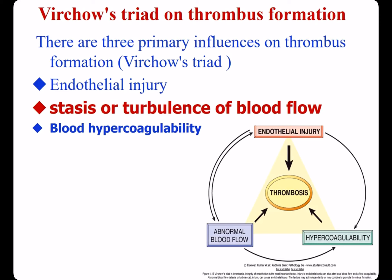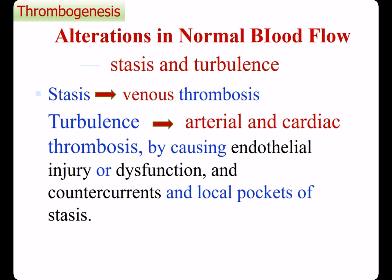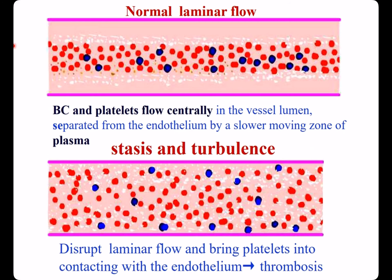Now let's see the influence of stasis or turbulence of blood flow on thrombogenesis. Stasis contributes to venous thrombosis. Turbulence contributes to arterial and cardiac thrombosis. In normal laminar flow, blood cells and platelets occupy the center of the blood stream and are separated from the endothelium by a layer of plasma which moves more slowly. In stasis or turbulence, normal laminar flow is disrupted, bringing platelets into contact with the endothelium, finally leading to thrombosis.